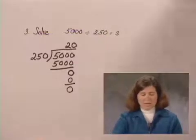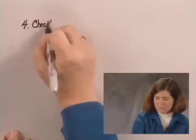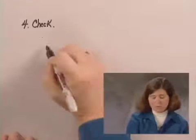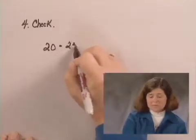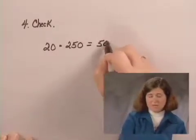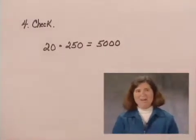To check, the fourth step in the process, we could multiply the number of staplers that we filled which was 20 times the number of staples in each stapler. When we carry out that multiplication we get 5,000 staples which is what we started with in the box. So we have a check.